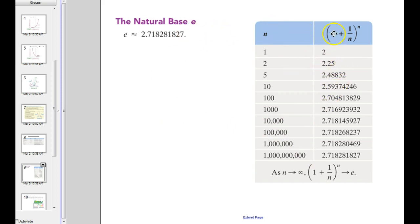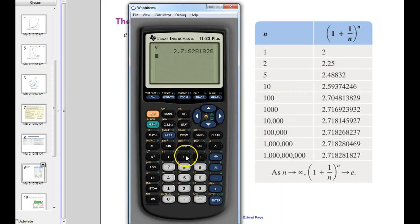But what E is defined to be is this expression. 1 plus 1 divided by a number raised to that same number. So when it's 1, it's 1 plus 1 over 1, which is 1. 1 plus 1 is 2. 2 raised to the first is 2. But when it's 2, 1 plus 1 half to the second, that's 3 halves to the second power. That's 2 and a quarter. If I did 3 halves squared, I get the 2.25. So anyway, we're just taking this number right here and plugging that in for the N there and there.